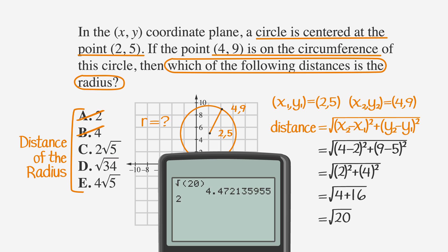Let's plug in C, or two times the square root of five, into the calculator. And look at that, it matches. We've got our answer, Choice C.